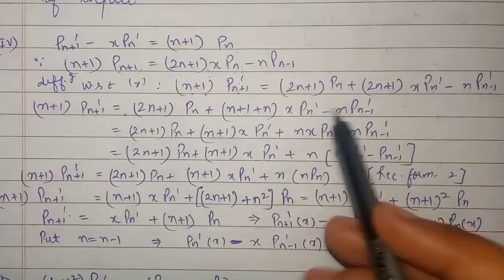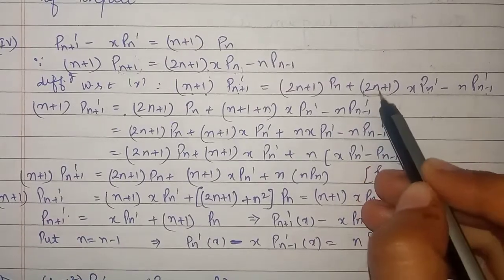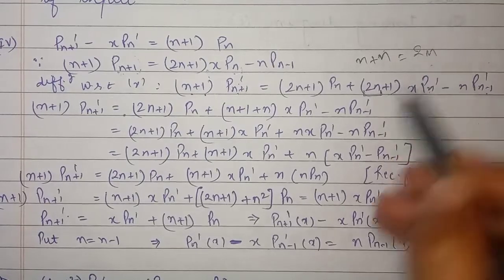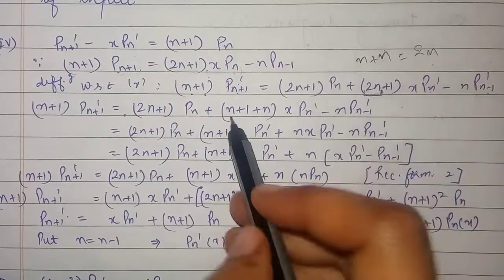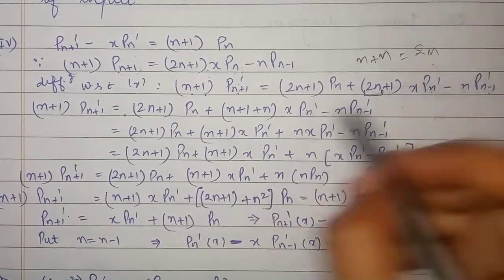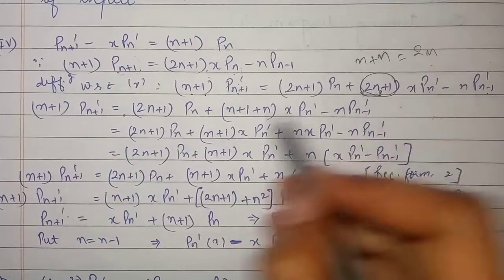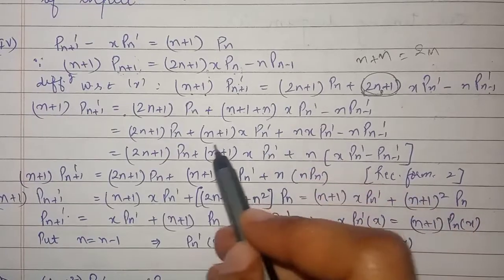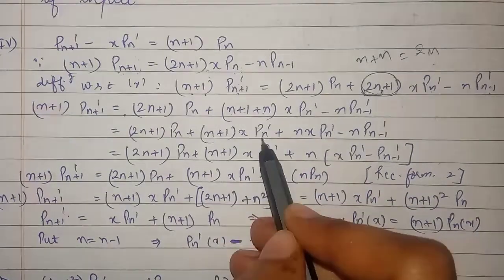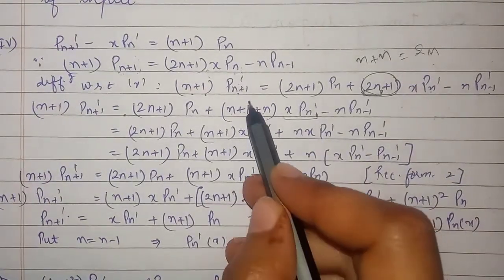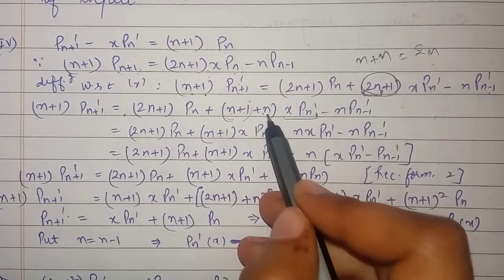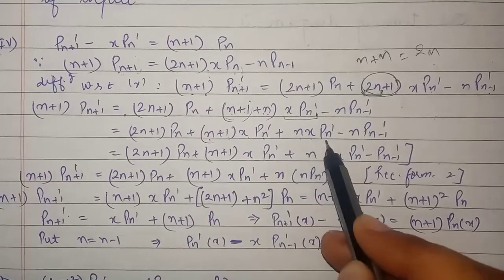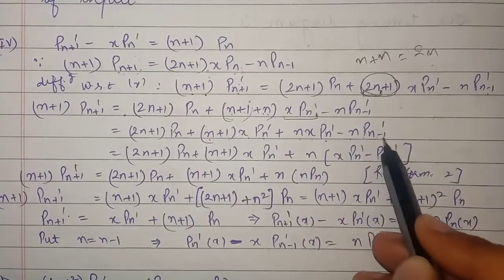Now we will split 2n into n plus n, because n plus n gives us 2n. So we write this term as (n+1) + n. After separating out these terms we get (n+1)·x·P'(n), where x·P'(n) gets multiplied, and then by n, so we get (n+1)·x·P'(n) plus n·x·P'(n) minus n·P'(n-1).